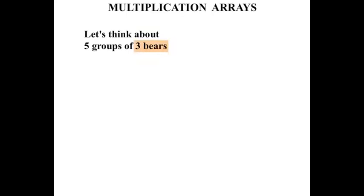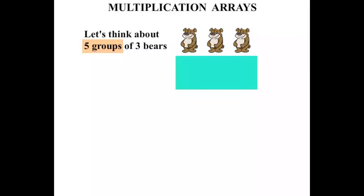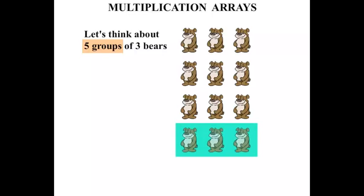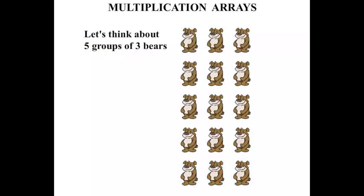So three bears firstly — one, two, three. And we're going to have five groups of them. There's one group, two groups, three groups, four groups, five groups. So we've got five groups of three bears.